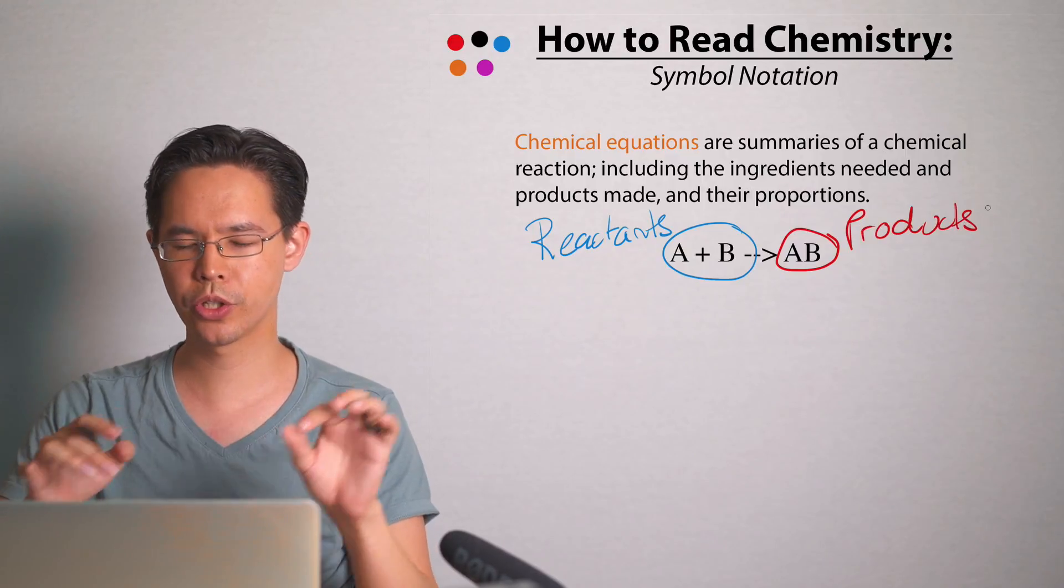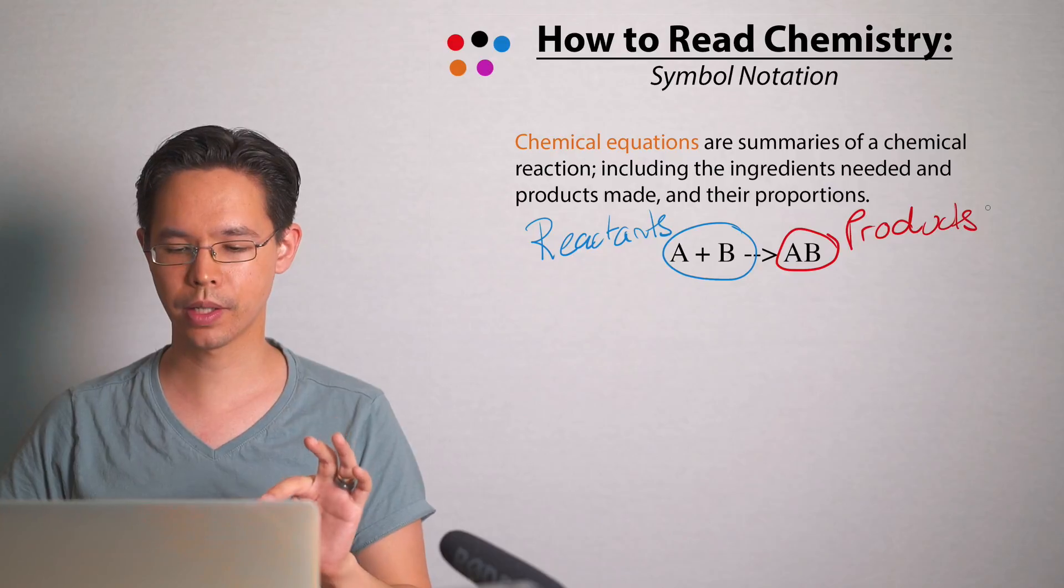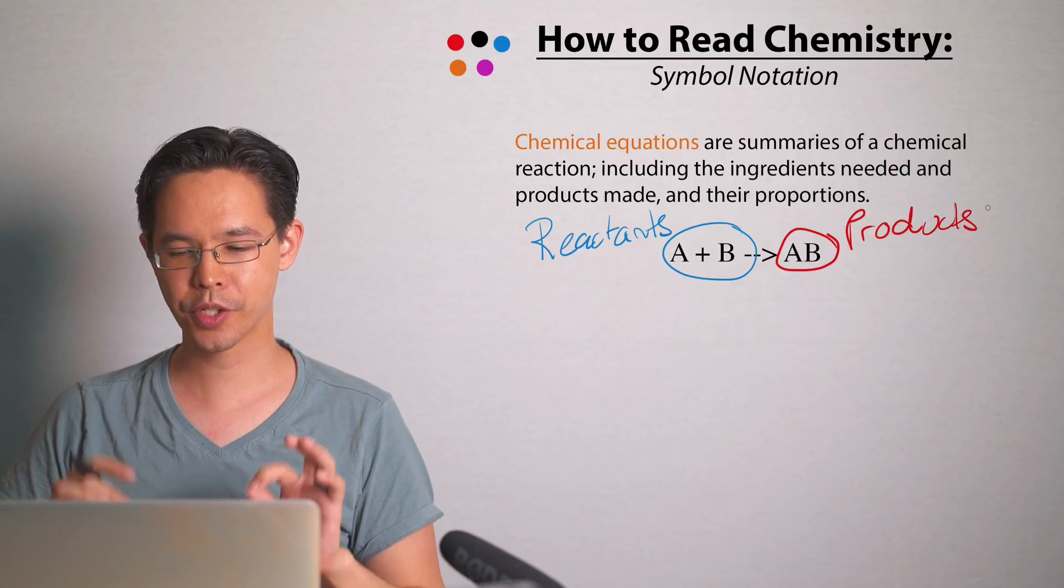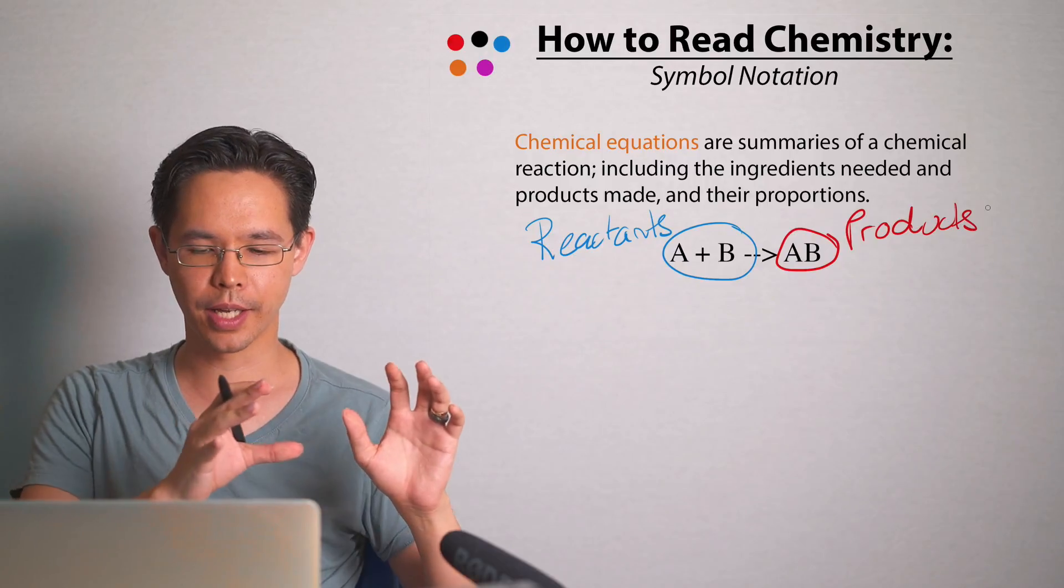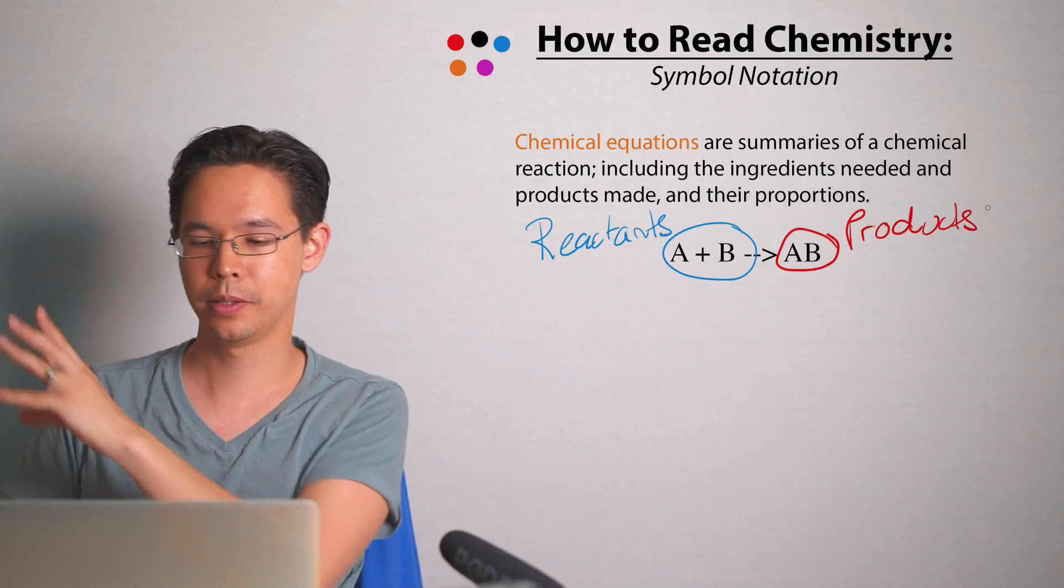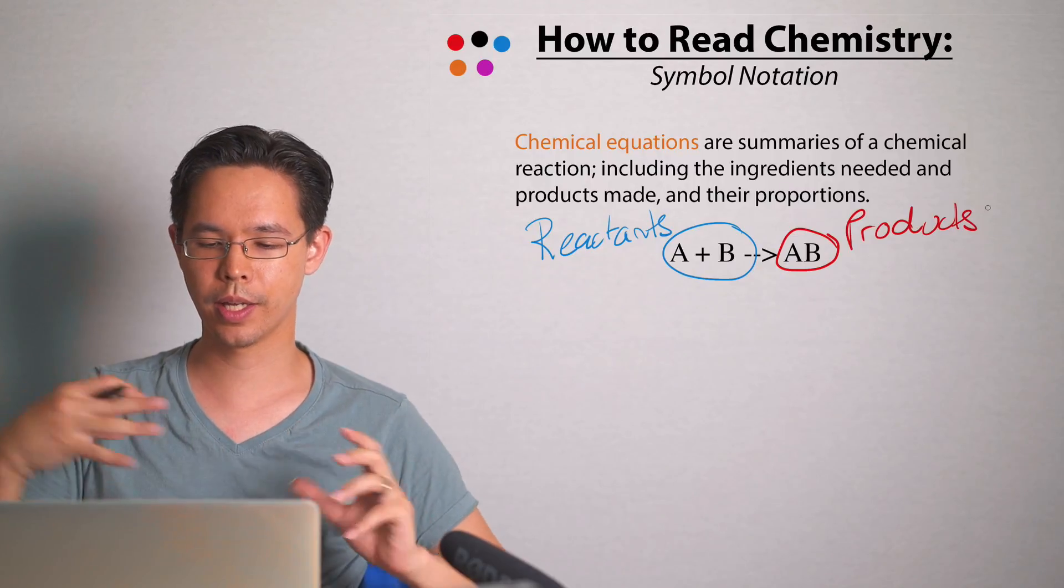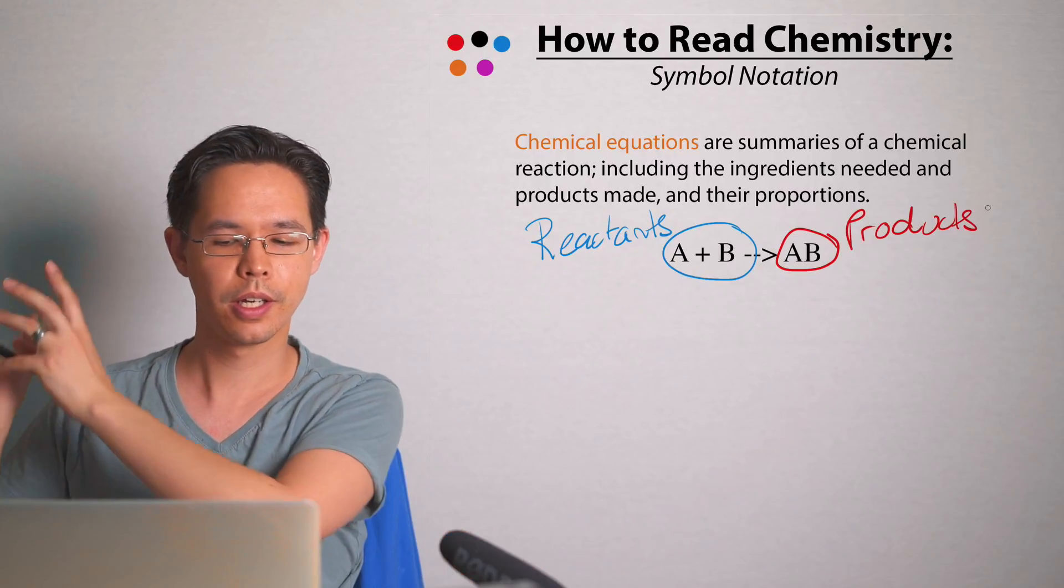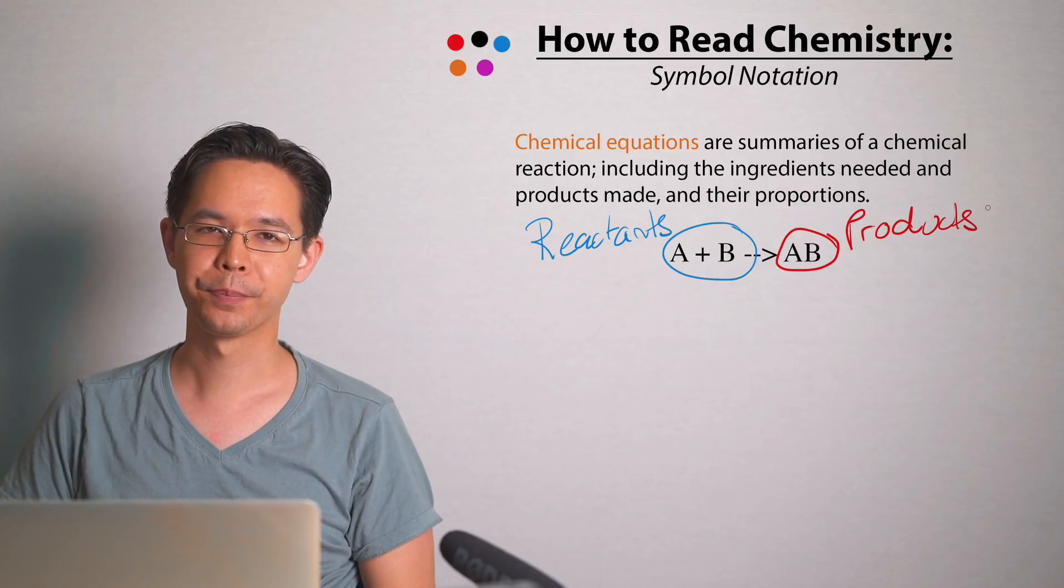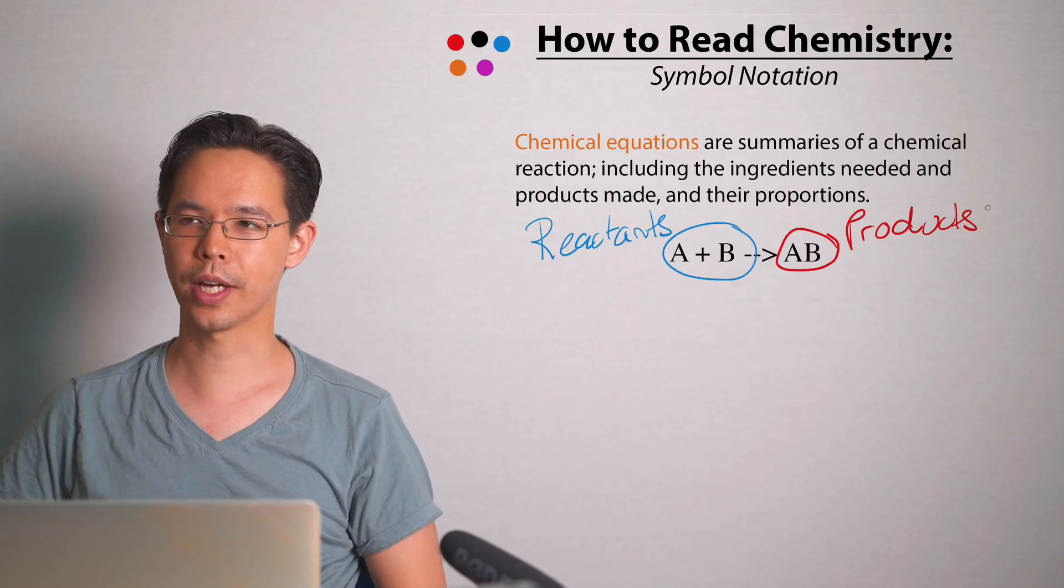And in the middle of the chemical equation is an arrow sign, not an equal sign but an arrow sign, and this has a special meaning. It means the stuff on the left, the reactants, reacts to form the stuff on the right, or A plus B yields the stuff on the right hand side.